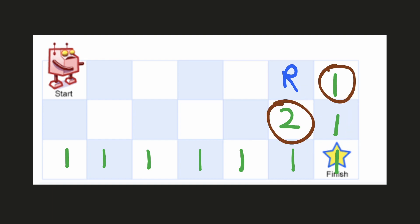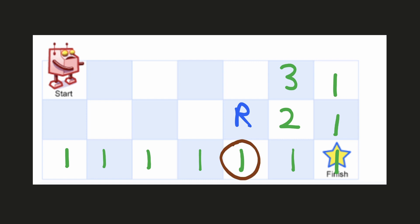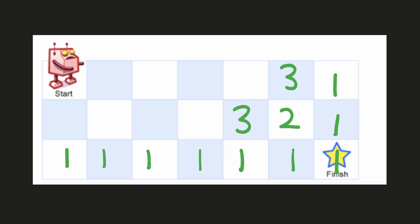When we went right, there was only one way to reach the destination, and when we went one step down, there were two ways. This result could have been derived from the pre-computed results for the right and the below cell — we could have summed these two and found the result. Similarly, for any position, we can sum the results for the right and the below cell.